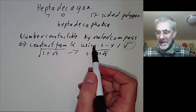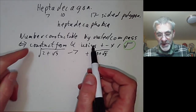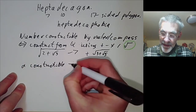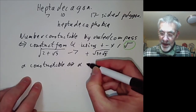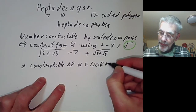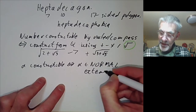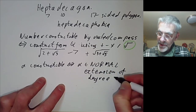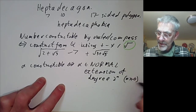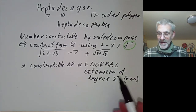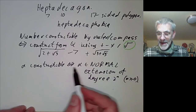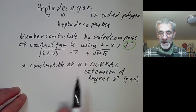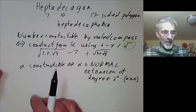So at the moment this isn't terribly useful, so let's rephrase it a bit. Alpha is constructible if and only if alpha is contained in a normal extension of the rationals of degree 2 to the n for some n greater than or equal to 0. This actually allows us to tell whether numbers are constructible, because now we've reduced it to a problem about finite extensions which we can apply Galois theory to.